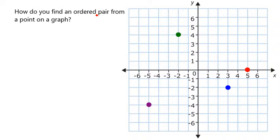An ordered pair is a way of describing numerically the position of a point on an xy plane like this. So if we start with this green point,